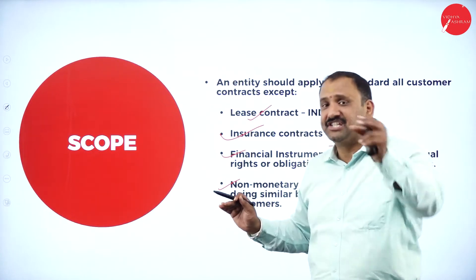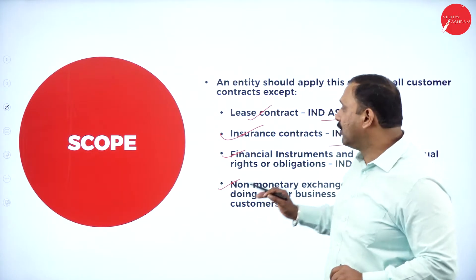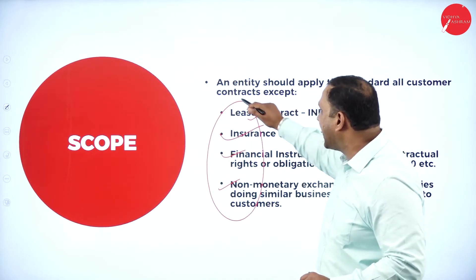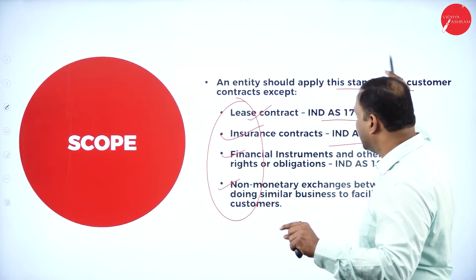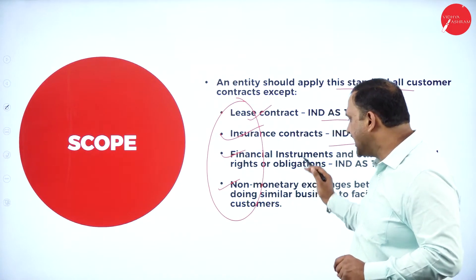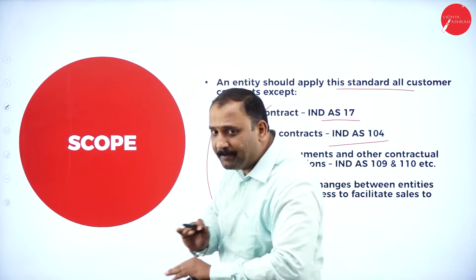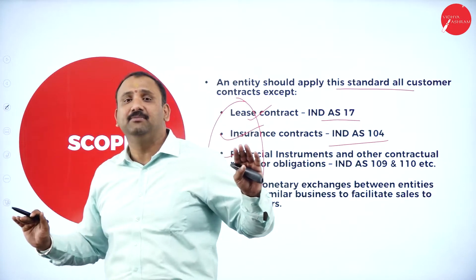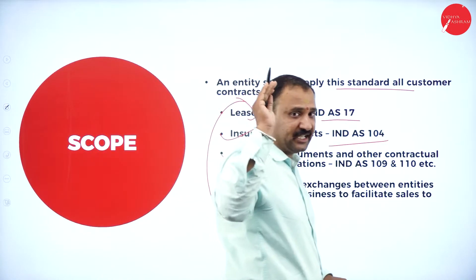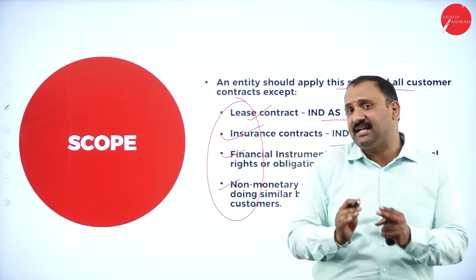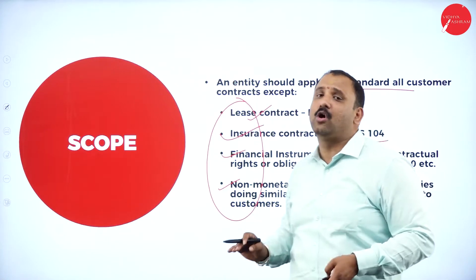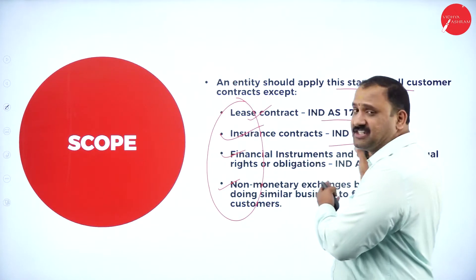An entity should apply IND AS 115 to all customer contracts except lease, insurance, financial instruments, and non-monetary exchanges. These factors will not be included under AS 115. It will only talk about pure consulting and pure services being rendered to the customer. You should not include these other factors because separate standards exist for them.